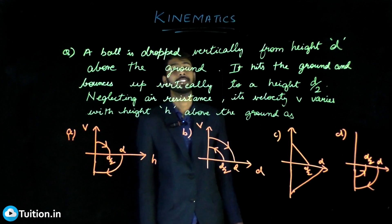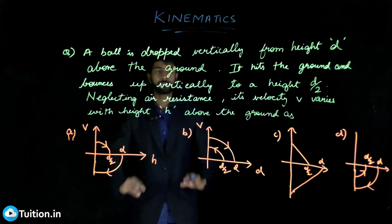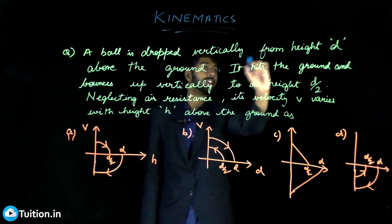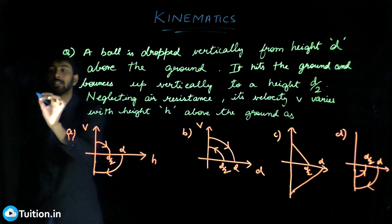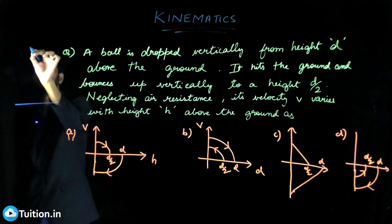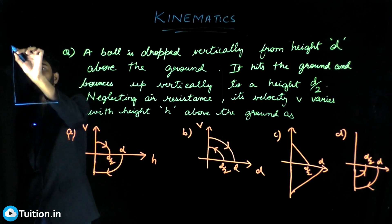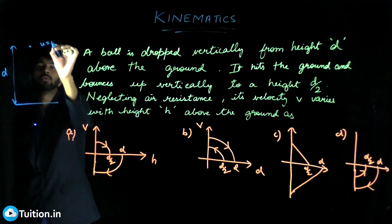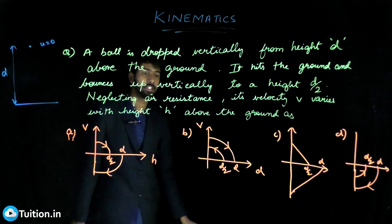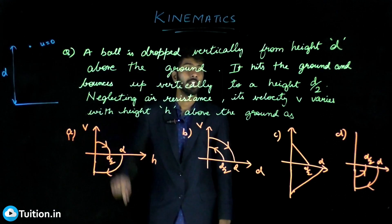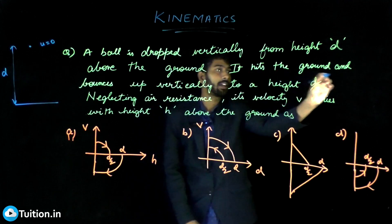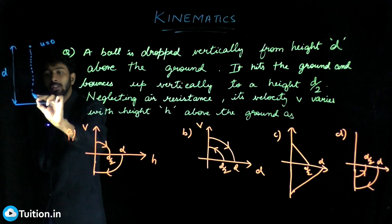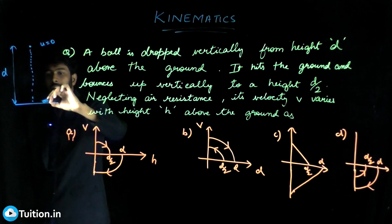Let's look at this previous problem from kinematics. It's a simple problem wherein there is a ball which is dropped vertically from a height d. This is your ground. The ball is just dropped, so its initial velocity u is equal to zero. It comes down and hits the ground.